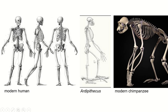When we look at the skeleton of the modern chimpanzee, the modern human, and Ardipithecus — an ancestor of humans closely related to ancient chimpanzees — we see a lot of homologies, such as bone structure in the arms and legs. We also see a homology of the opposable big toe between Ardipithecus and the modern chimpanzee, but not in the modern human. We don't see analogies here because these organisms share common ancestry.